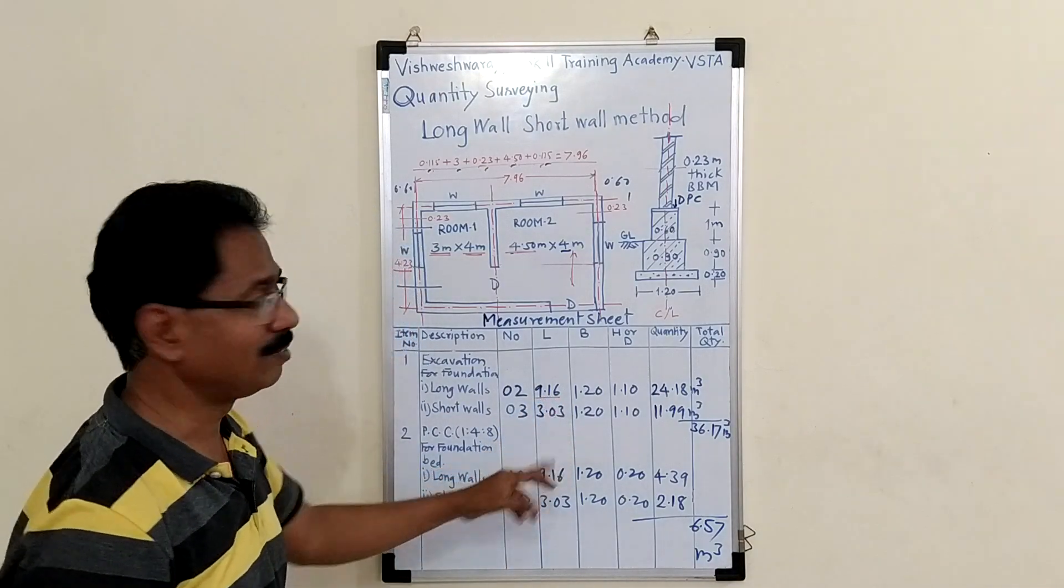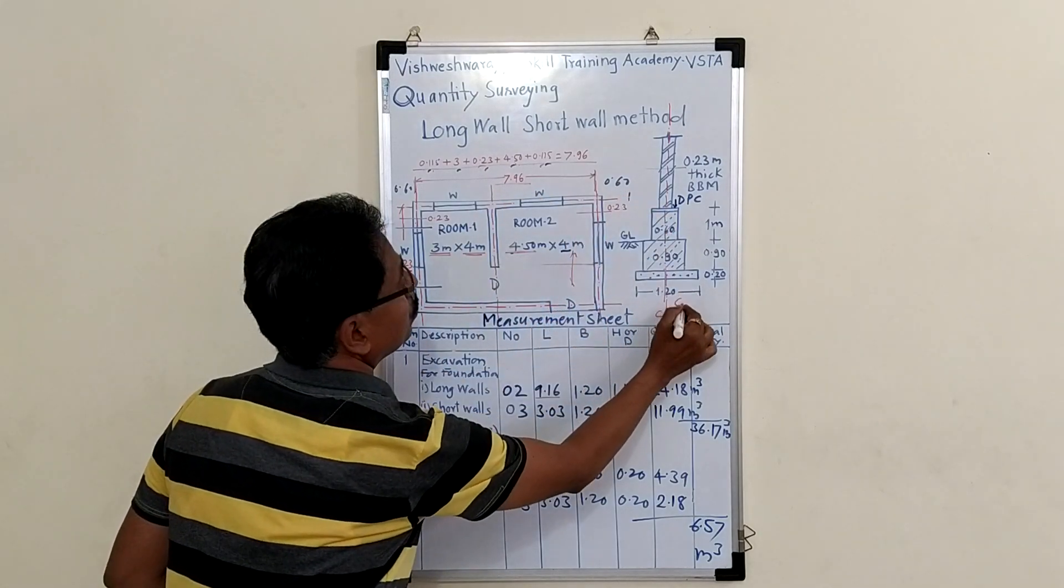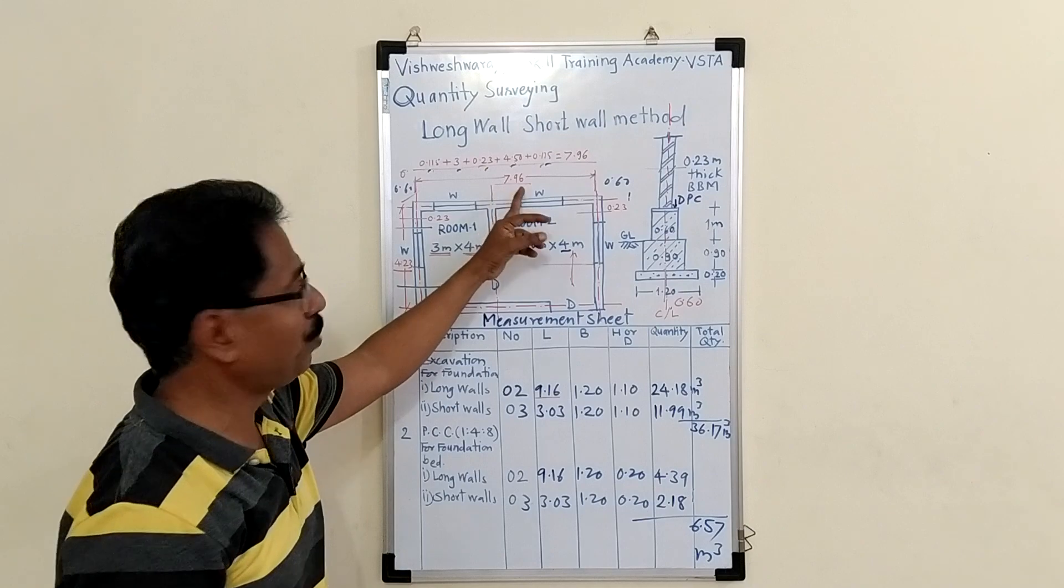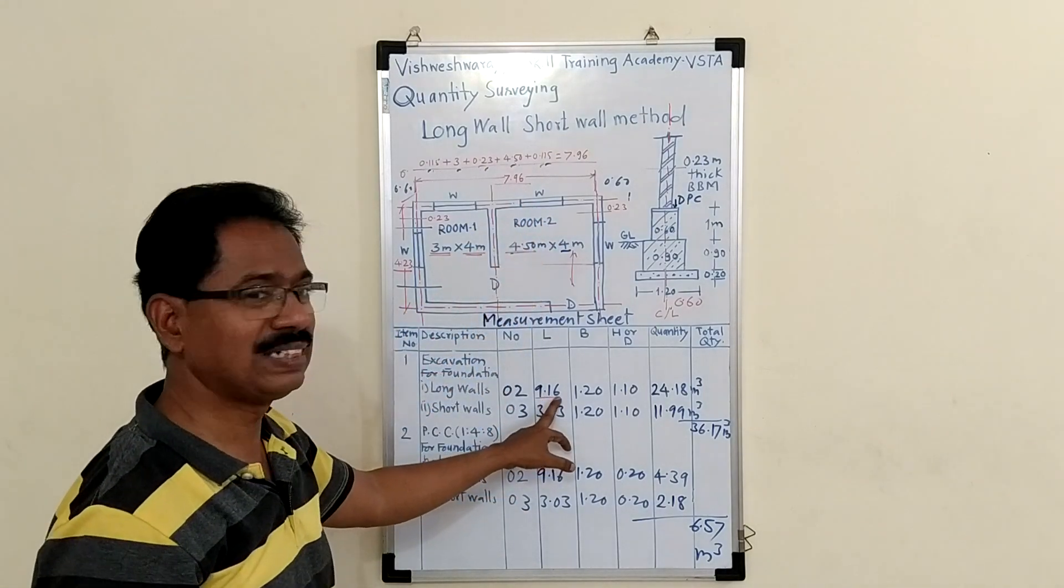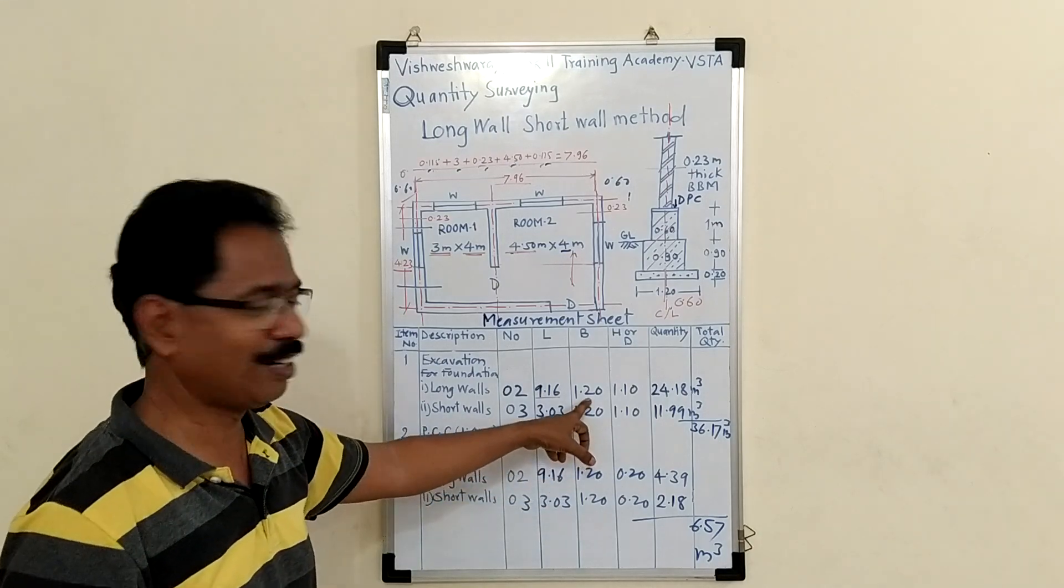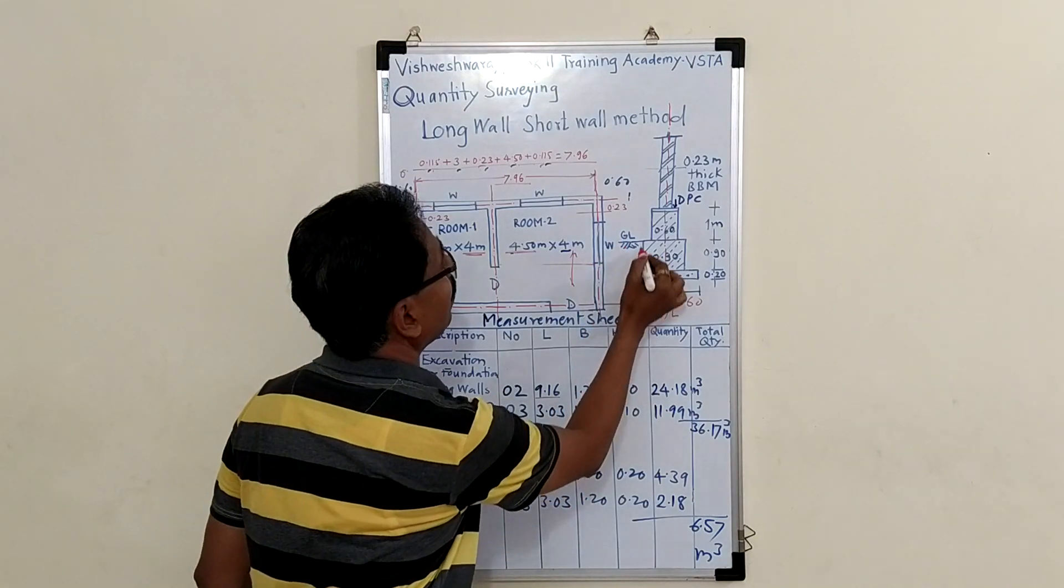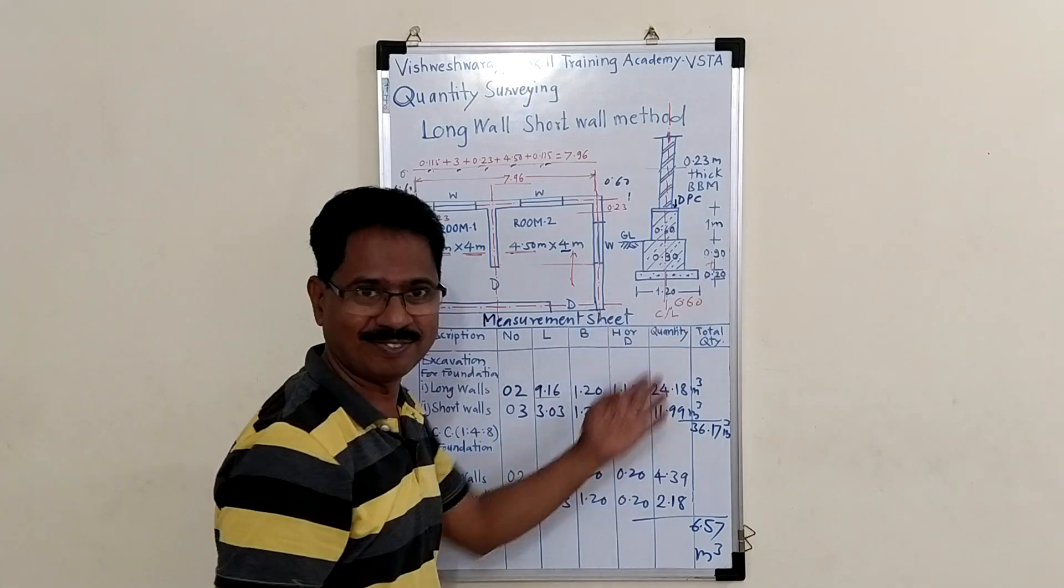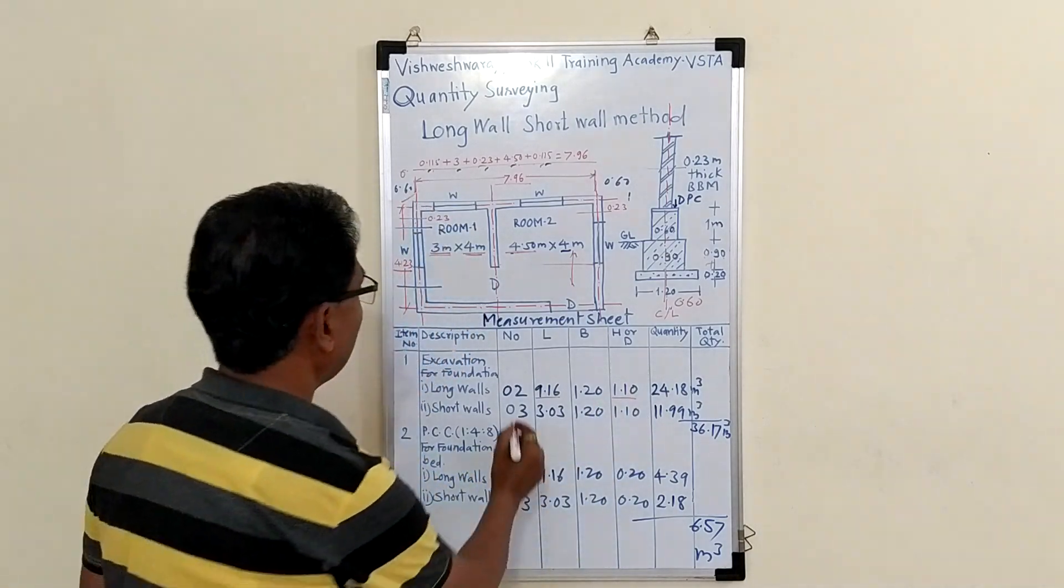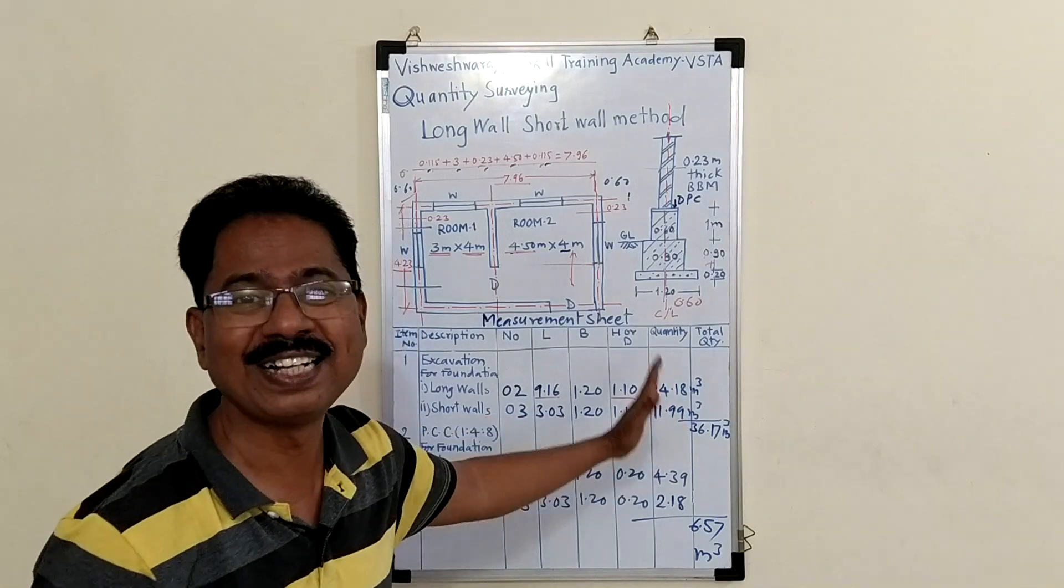Length. How? This is 7.96 plus 0.60 on this side plus 0.60 on this side. So, 7.96 plus 1.2, it comes 9.16. So, this is the length for excavation for long wall. Then width of excavation of course 1.20 and depth. Here is the sign of ground level. So below 0.90 plus 0.20 thickness of PCC. It comes 1.1 meter. So your depth is 1.1. Multiplying all these figures you will get the quantity of excavation for long walls: 24.18 cubic meter.